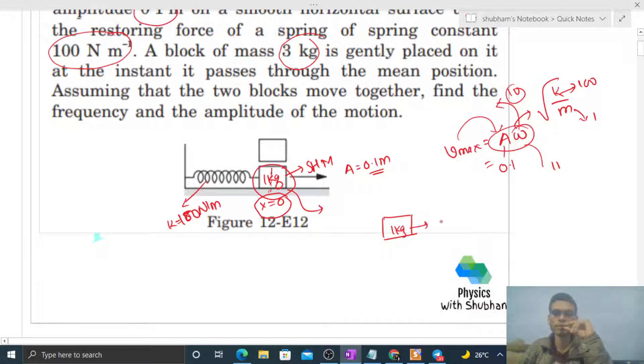This block of mass 1 kilogram is moving with a speed of 1 meter per second in the horizontal direction. Now if we talk about forces, in the vertical direction its weight is balanced by normal reaction.